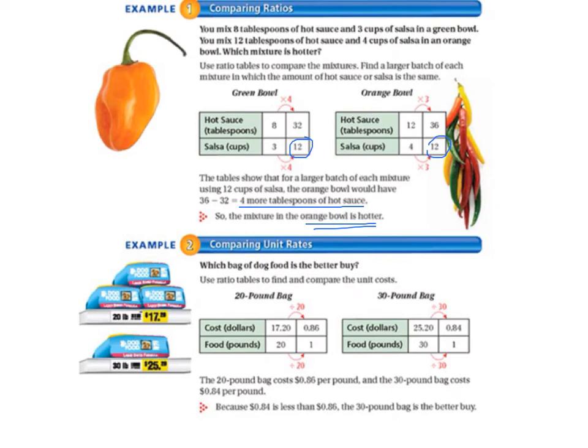Example 2, we're going to also compare ratios but we're going to do it by comparing unit rates. So which bag of dog food is the better buy? We're going to use ratio tables to find and compare the unit costs. So we have a 20 pound bag or a 30 pound bag.